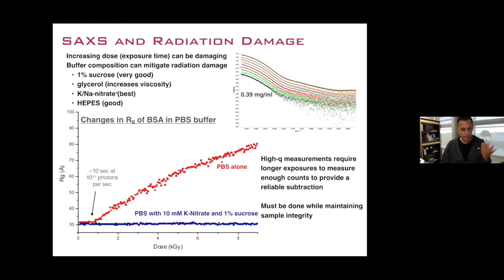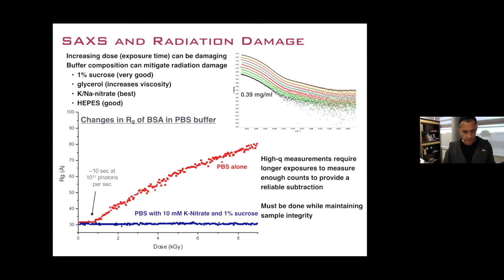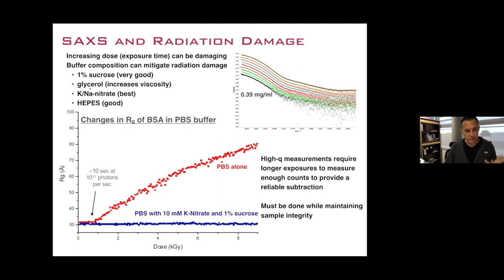This was done in PBS. We did a very long exposure with BSA and can see that in PBS alone, as we collect frames and reach a certain dose, the scattering is increasing, telling us we have radiation damage or aggregation. To mitigate that, you can add an additive like sucrose, glycerol, potassium nitrate, or HEPES. With PBS plus potassium nitrate and sucrose through that same dose experiment, we don't see any increase in radius of gyration.